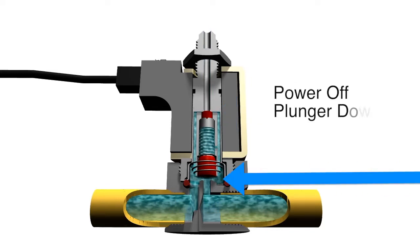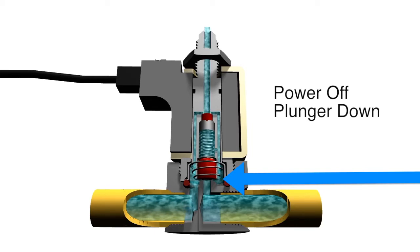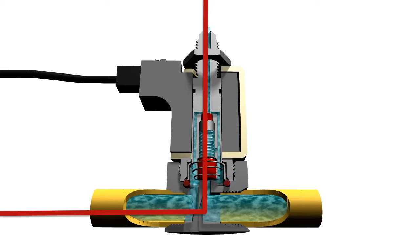When the power is off, the plunger is down, which seals off the body orifice and opens up the stop orifice, allowing flow through the valve from the cavity port and out the stop port.